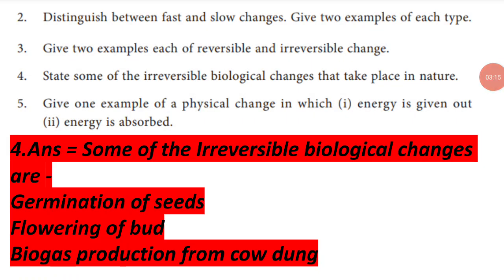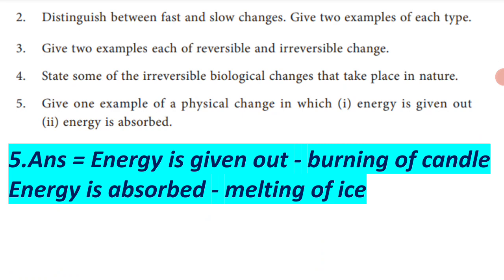Fourth, state some of the irreversible biological changes that take place in nature. Answer: Some of the irreversible biological changes are germination of seeds, flowering of a bud, and biogas production from cow dung. Fifth, give one example of a physical change in which energy is given out and one in which energy is absorbed. Answer: Energy is given out — burning of candle. Energy is absorbed — melting of ice.